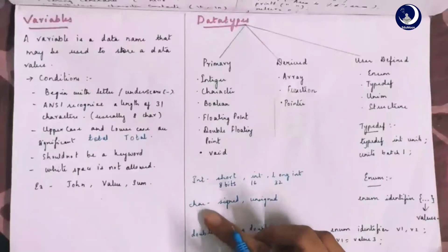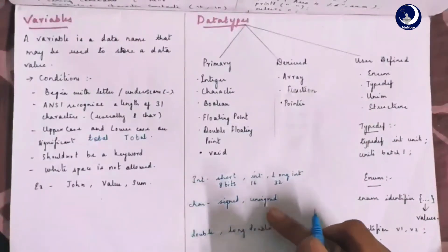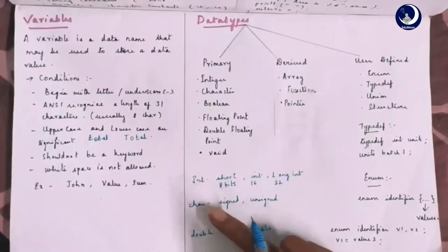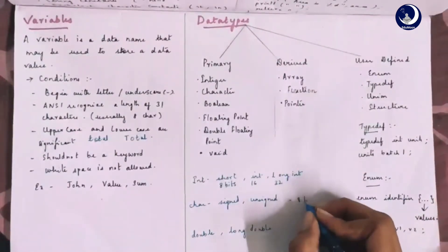Coming to char data type, we have signed and unsigned char. The size of both signed and unsigned char is 8 bits.